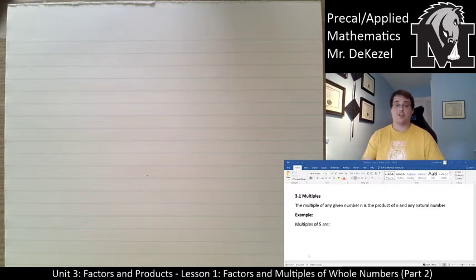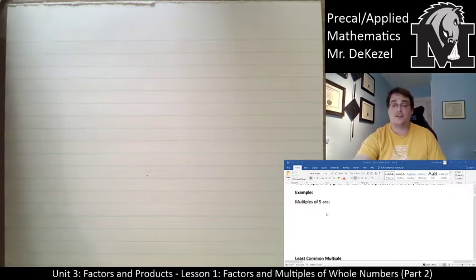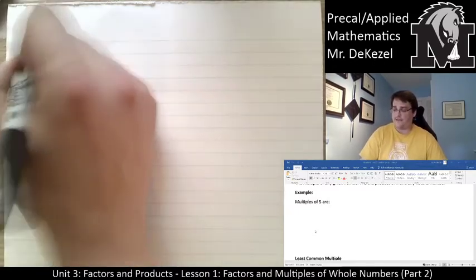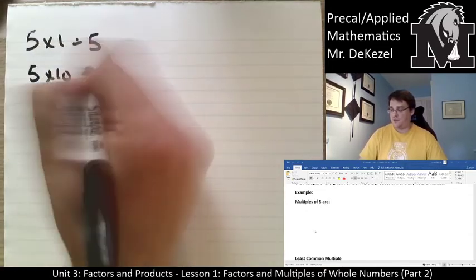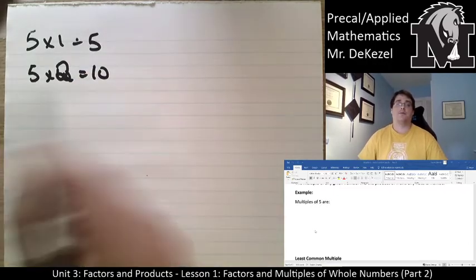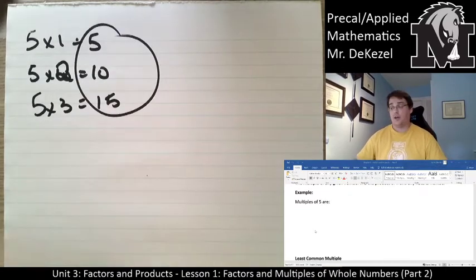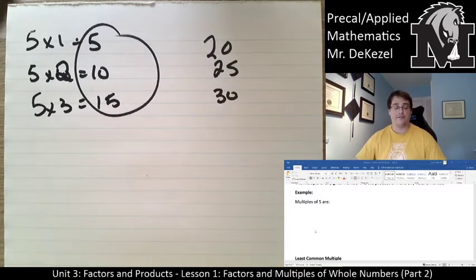Let's jump right in and talk about what multiples are. The multiple of any given number n is the product of n and any natural number. So you take a number like 5 — any number you get when you multiply it by a whole number is a multiple. So 5 times 1 is 5, 5 times 2 is 10, 5 times 3 is 15. Anything that ends in a 0 or a 5 is a multiple of 5.